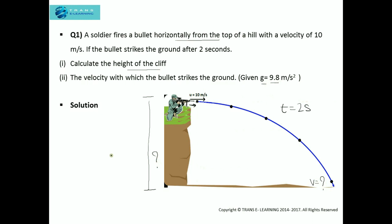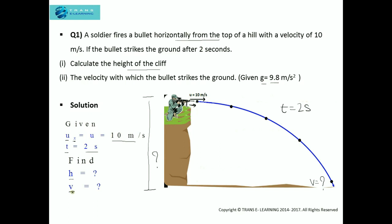The first step is to analyze what is given and what needs to be found. The given parameters are: horizontal velocity uₓ — where x represents the horizontal motion of the projectile (the bullet in this case) — is 10 m/s, and time t is equals to 2 seconds. We need to find the height of the cliff and the final velocity. We'll find the height first, then use it to find the final velocity.